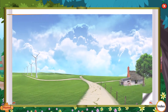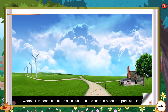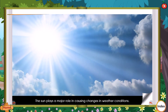Weather is the condition of the air, clouds, rain and sun at a place at a particular time. The sun plays a major role in causing changes in weather conditions.